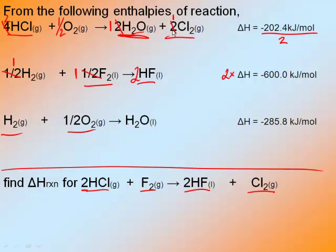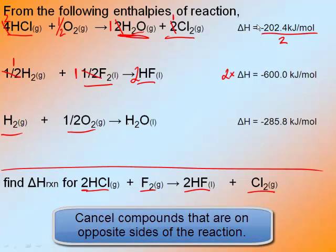Step two is make sure I have the correct number of everything. Step three: whatever I do to my chemical reaction, I must do to the delta H. Step four is cancel out anything that's on both sides of the chemical reaction and is not needed in the overall reaction.